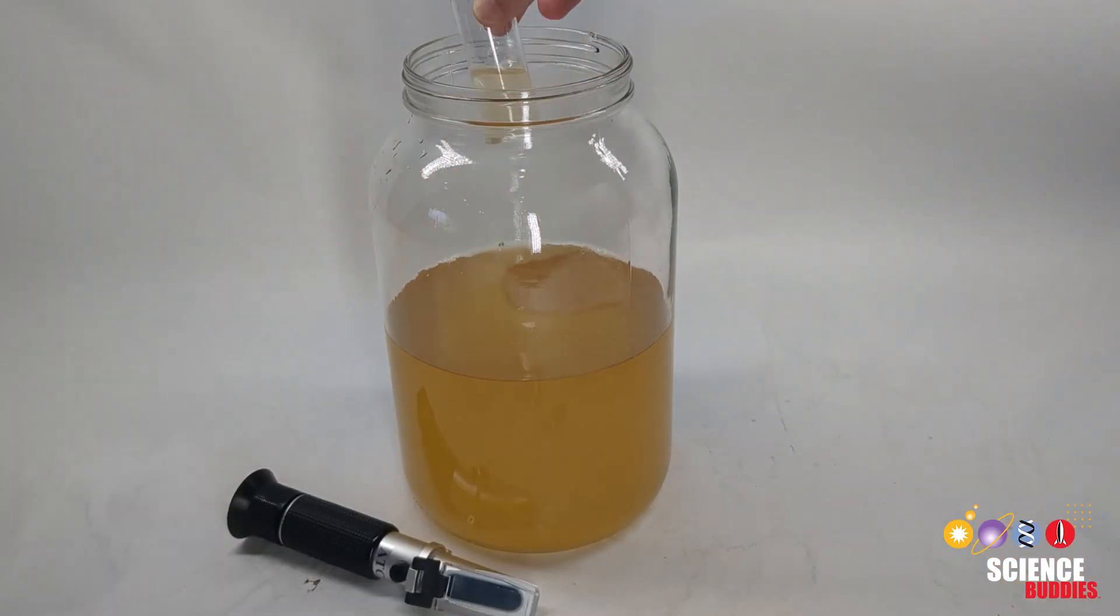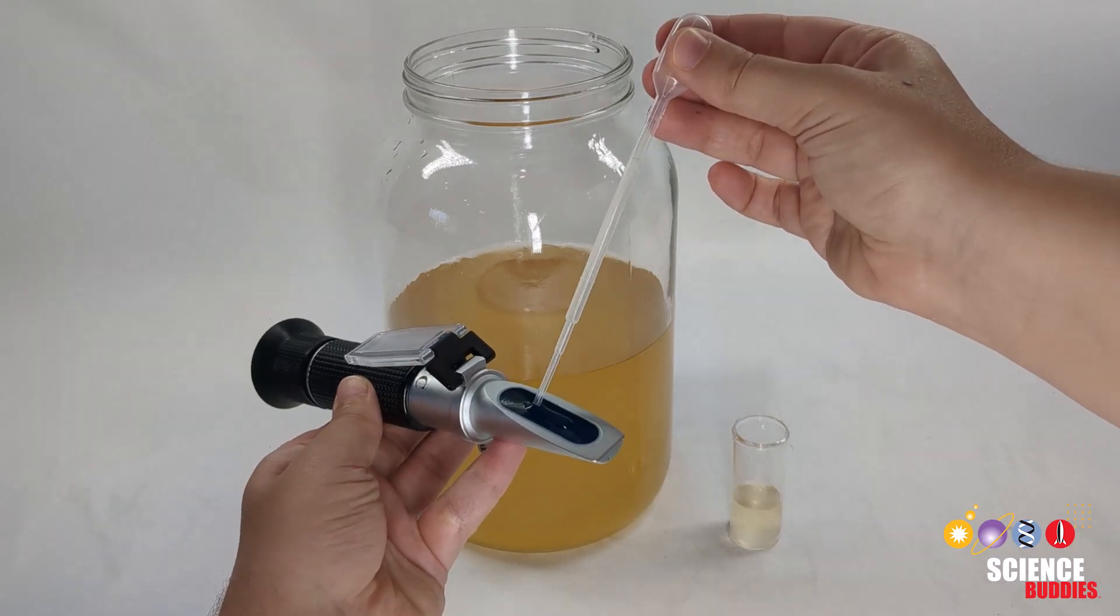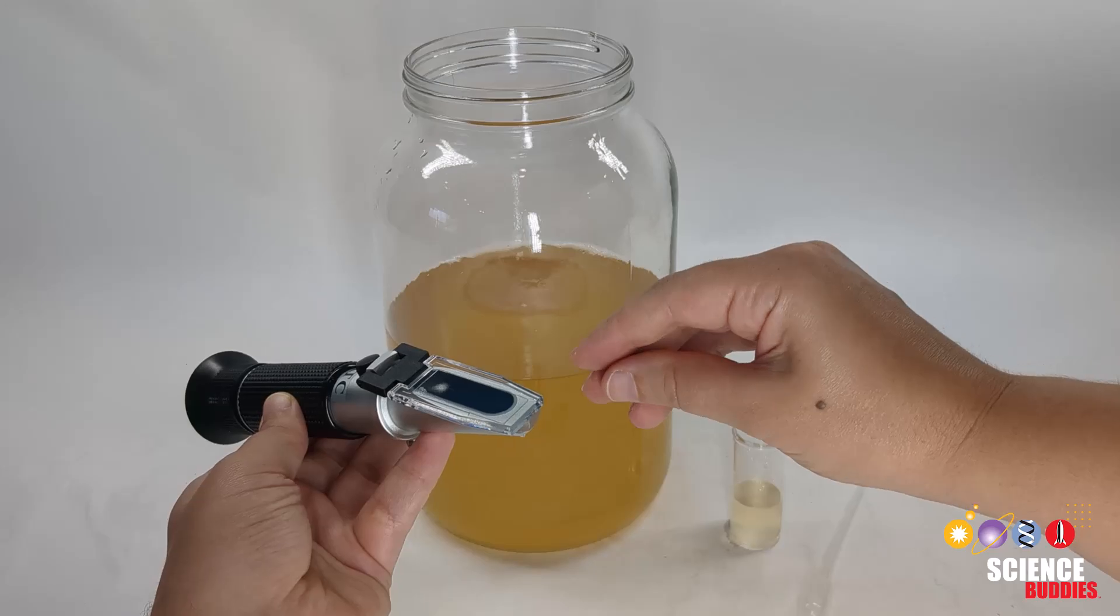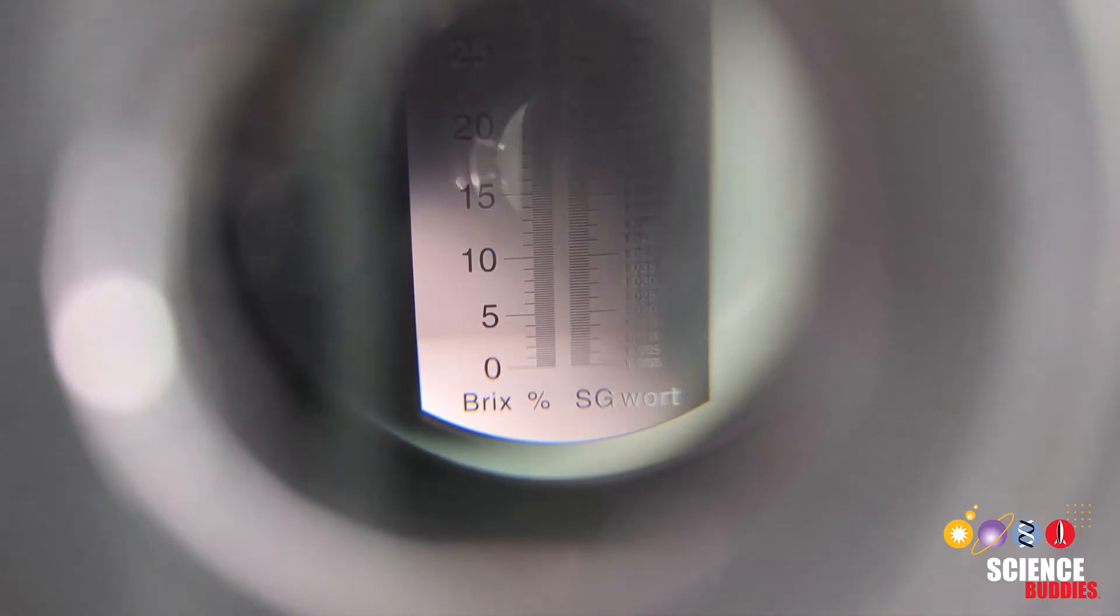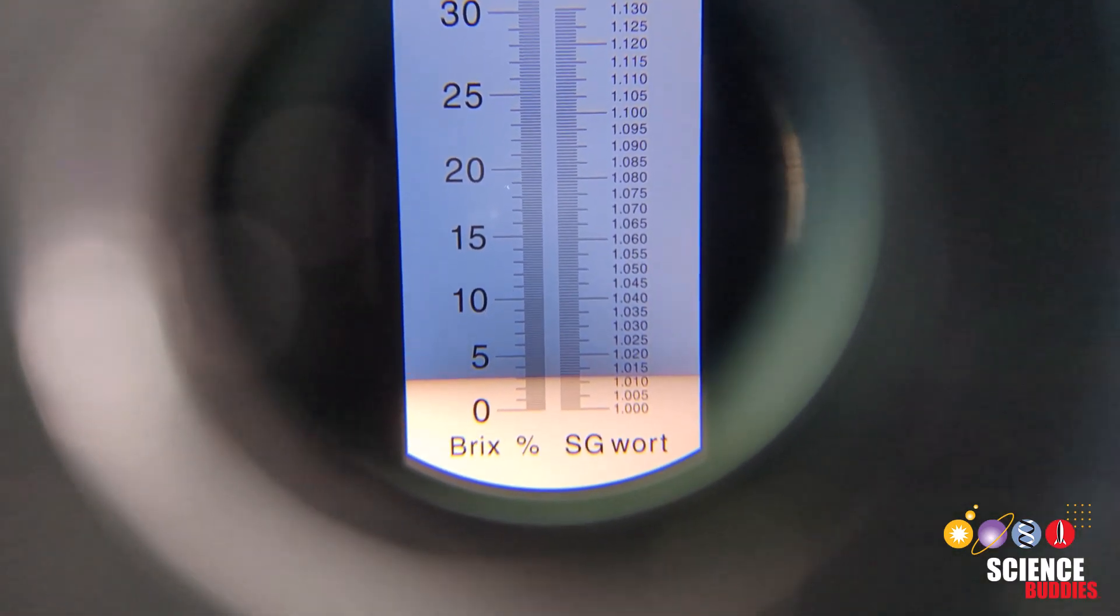To test your solution, obtain a small sample from your jar. Flip up the cover plate to expose the top of the prism assembly and pipette a few drops of solution onto it. Gently put the cover plate down over the liquid to create a smooth layer as bubbles can impact your reading.